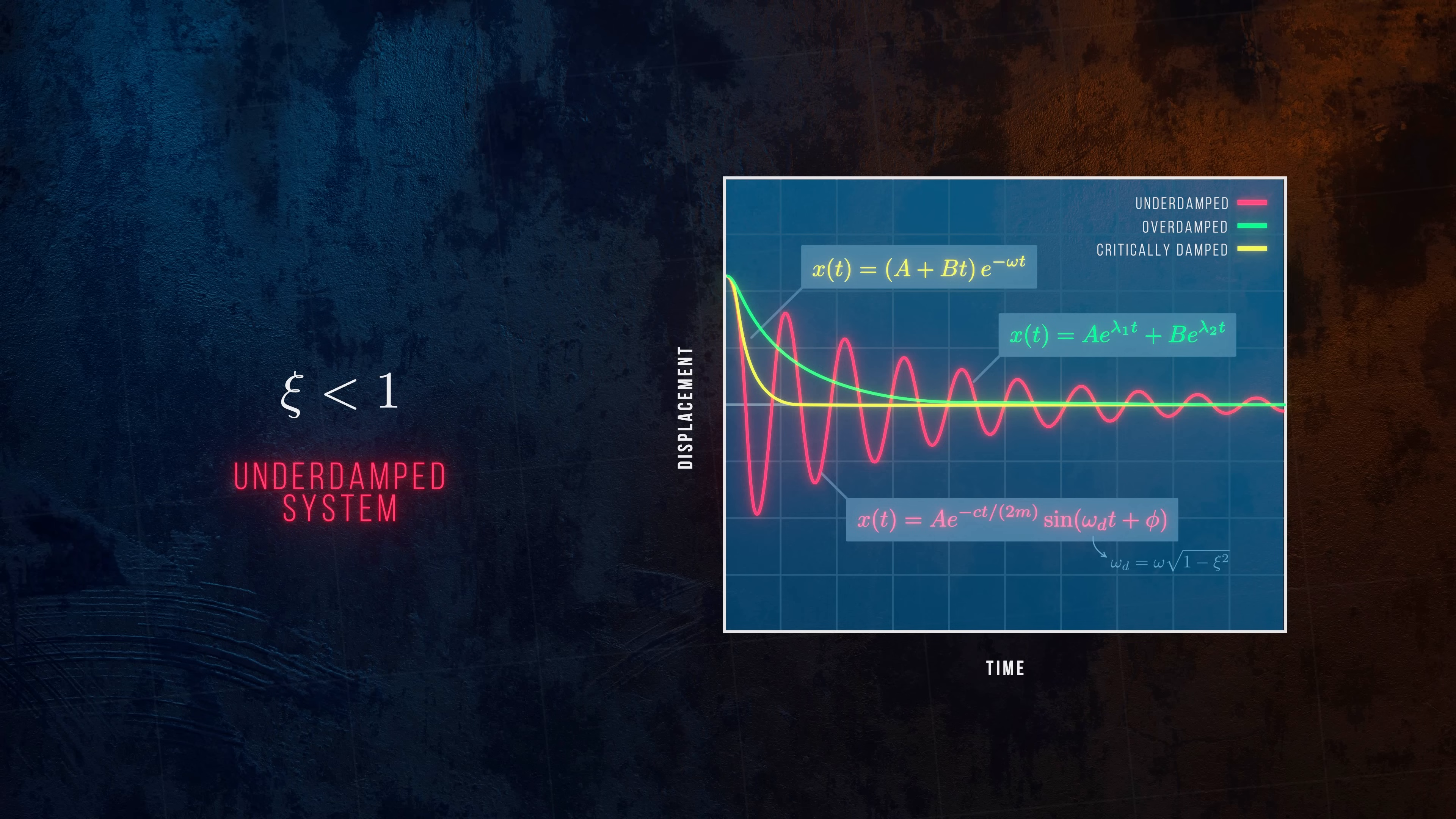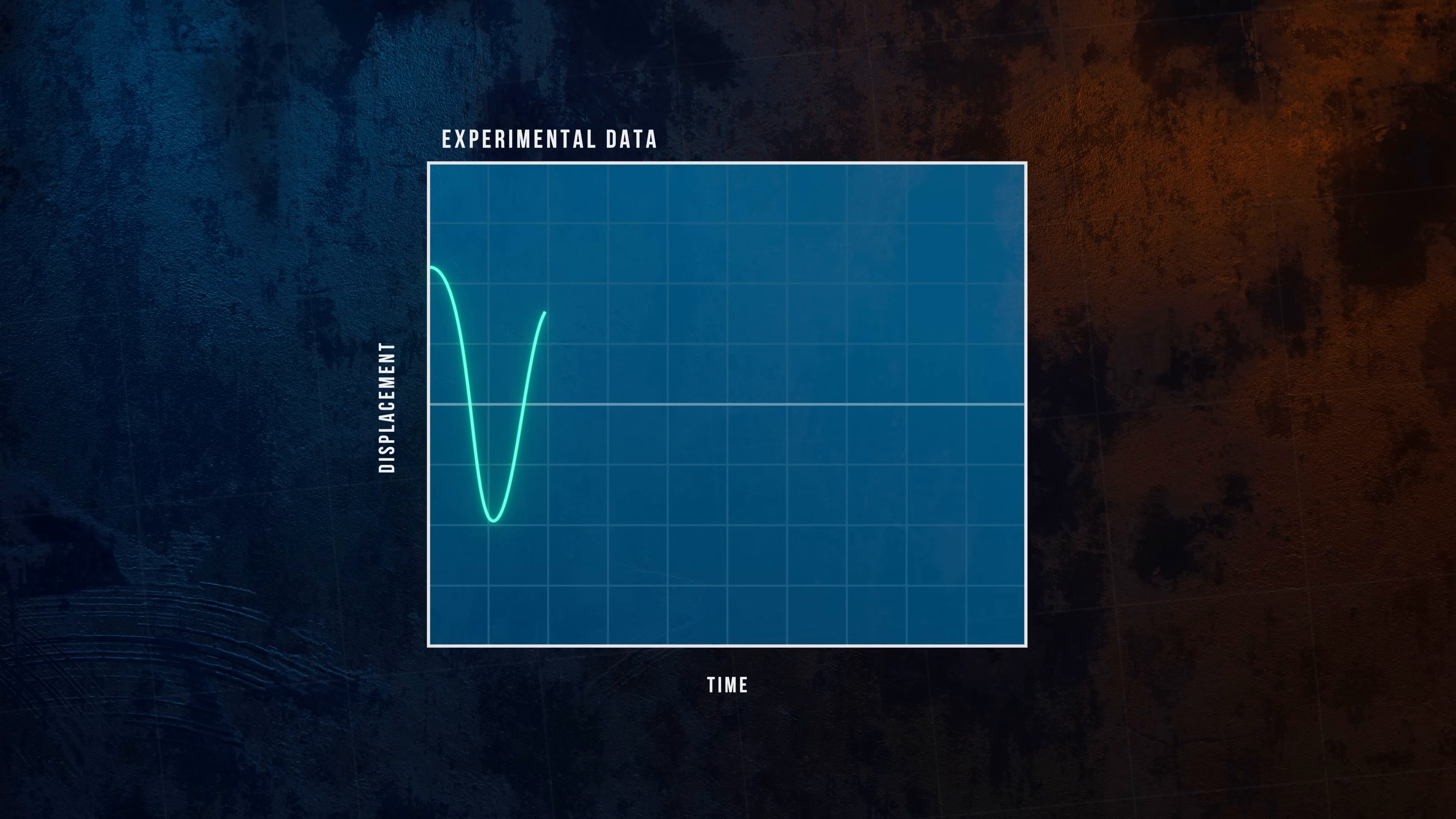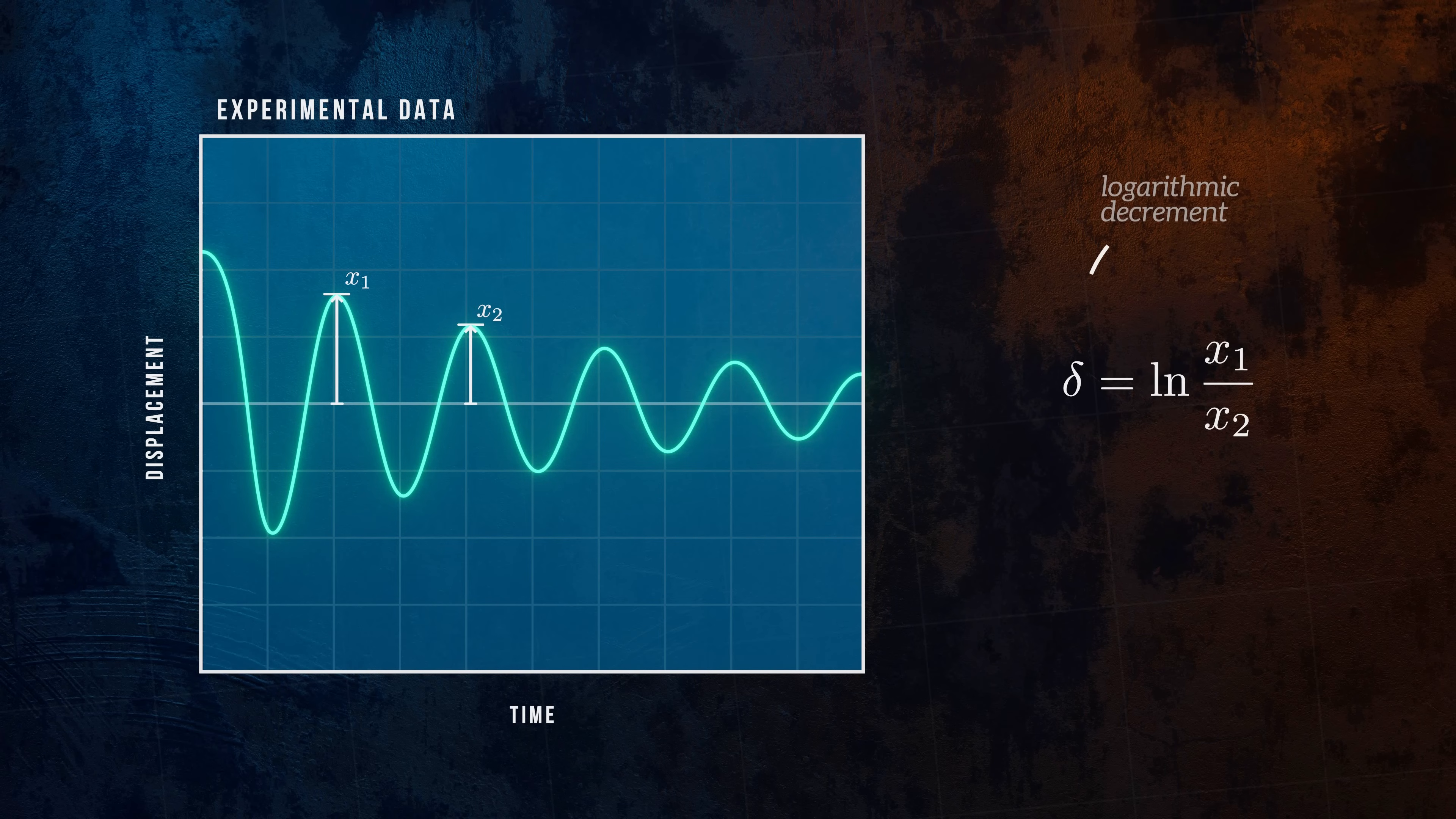Of course, if we're modeling a real system, we need a way of figuring out which value to be used for the damping coefficient. It usually has to be determined experimentally, and one way of doing this is by measuring the displacement of the system as it oscillates. A parameter called the logarithmic decrement can be calculated based on this test data as the natural logarithm of the ratio of any two successive amplitudes. The damping ratio can be calculated from the logarithmic decrement, providing an estimate of the overall damping in the system.